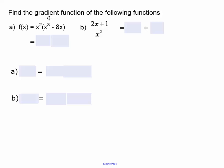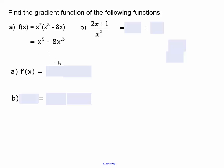This question asks us to find the gradient function, and we need to simplify before differentiating. Let's expand the brackets: x squared times x cubed, using laws of indices, is x to the power 5 (2 plus 3). Then we have minus 8 times x squared times x, which is x cubed. Now we can differentiate using f'(x) notation: the first term gives 5x to the power 4, and 3 times 8 is 24, so the second term gives minus 24x squared.